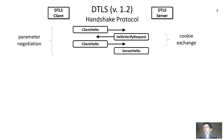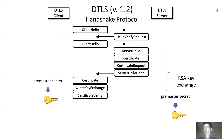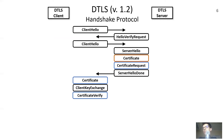The sides start the handshake by negotiating various parameters, most notably the cipher suite, which determines, among other things, the key exchange that will be used. This step may include a cookie exchange step initiated by the server meant to prevent denial-of-service attacks. After negotiating parameters, the two sides perform key exchange to establish a shared secret from which to derive session keys. In our example, the sides also mutually authenticate by supplying a certificate message to each other.